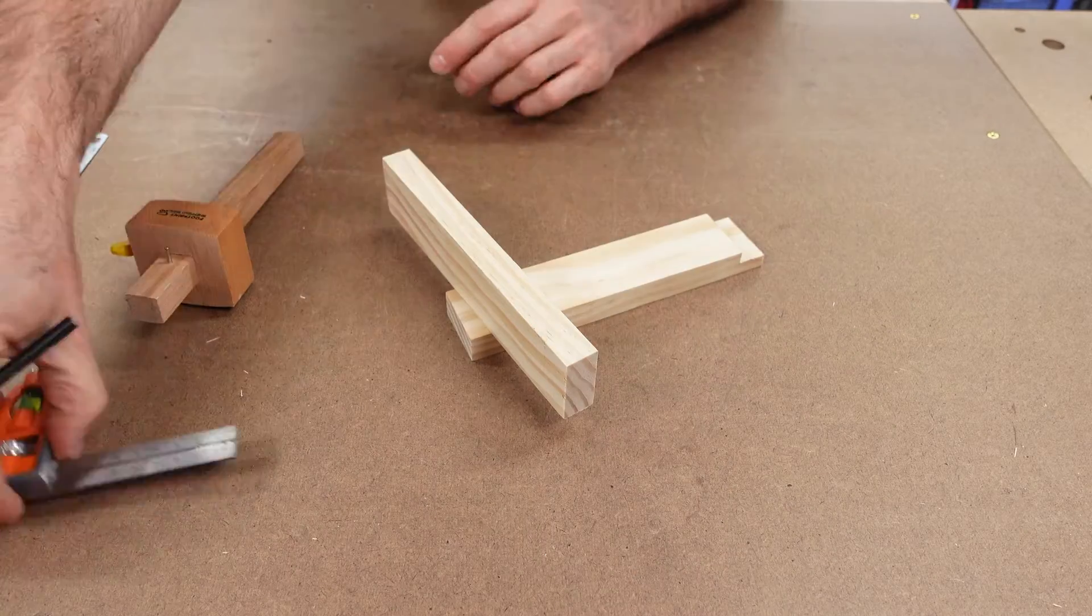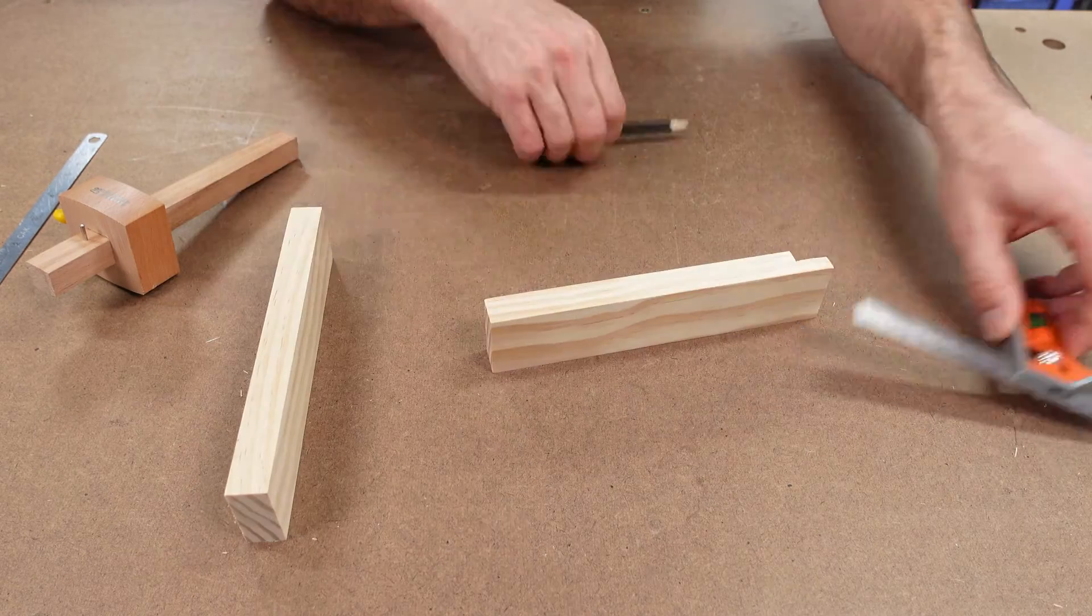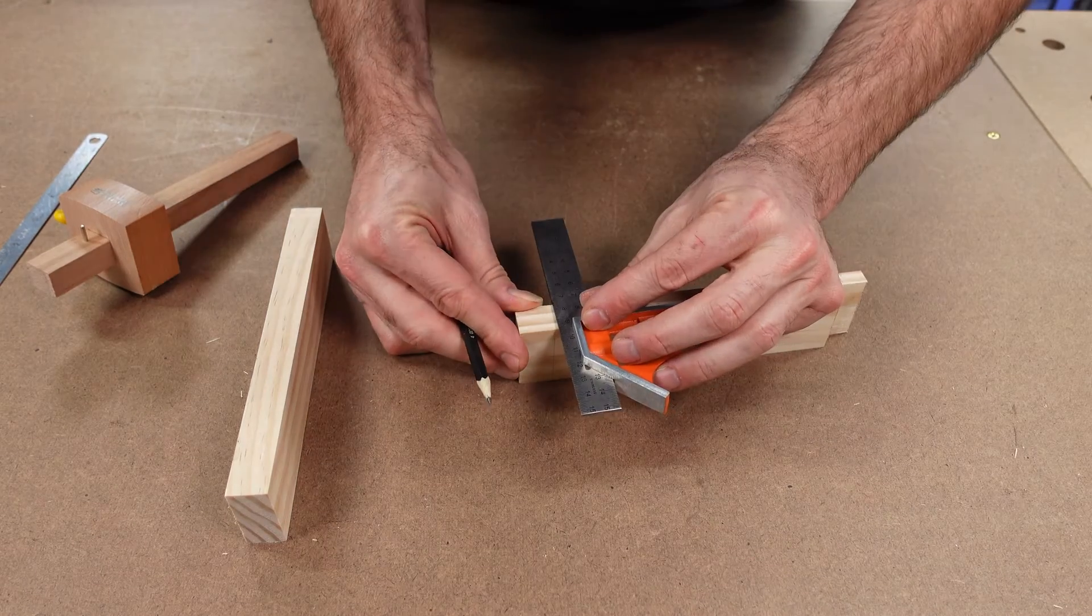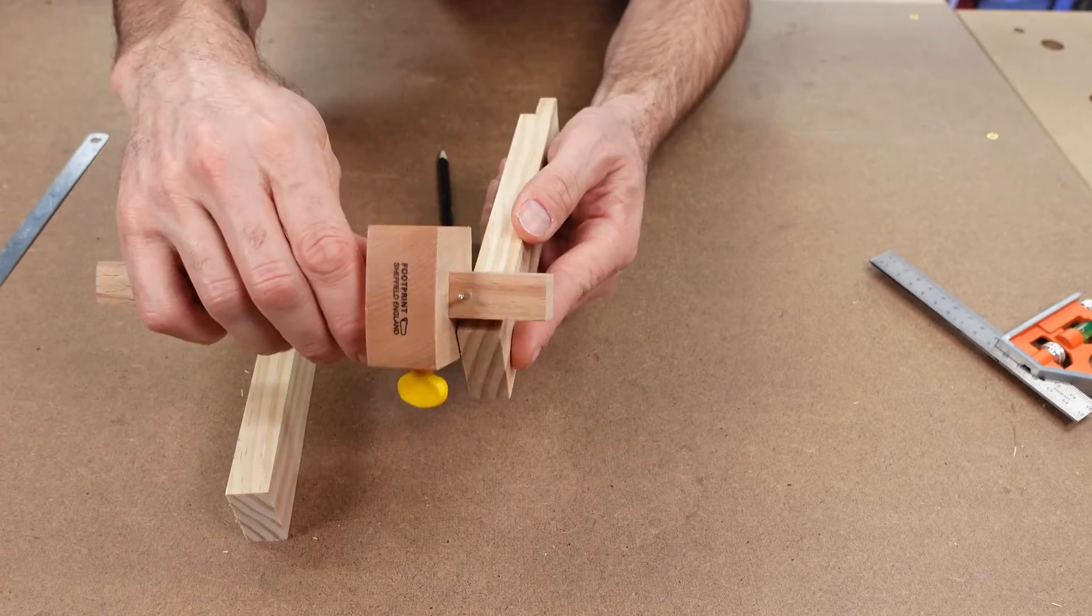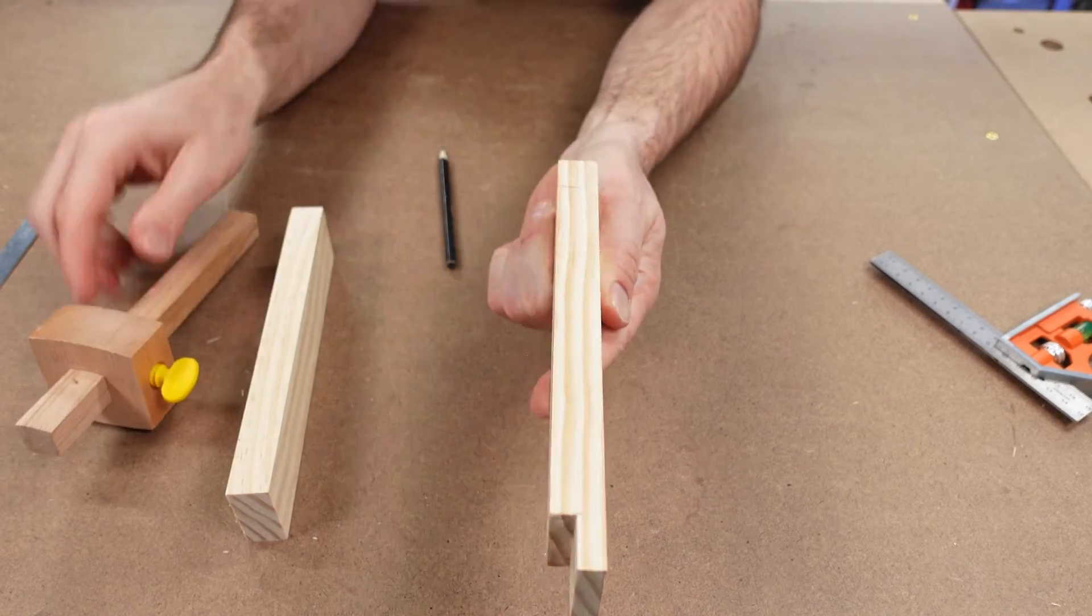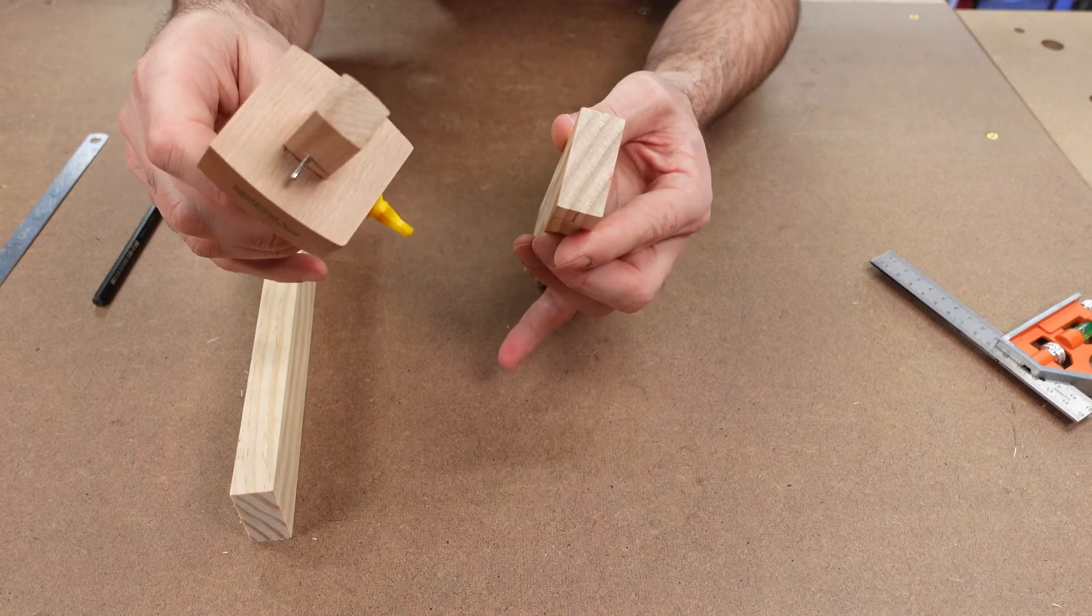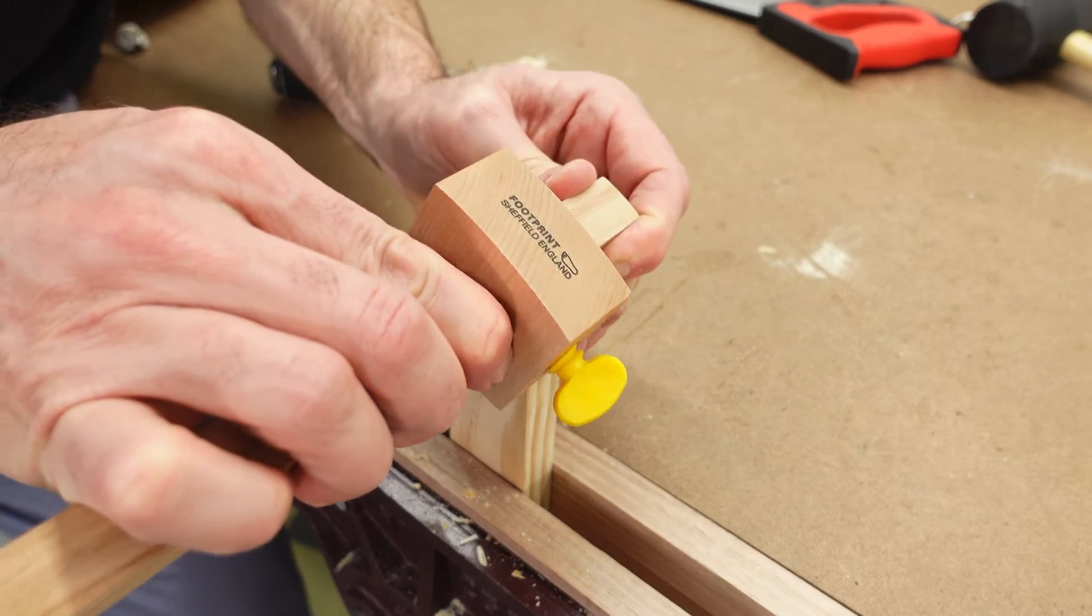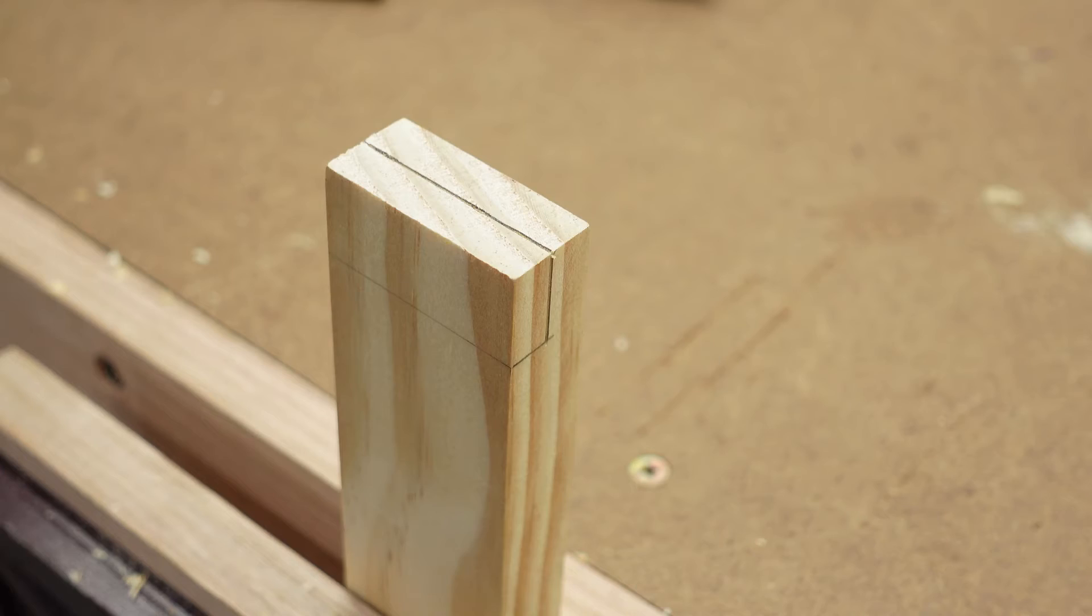Following the same steps as before, I'll make another one on the other end. But wait, I'll stop here. Marking on end grain without a vise. That's a dud. Use a vise. Ah, that's much better. Check that out.